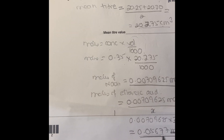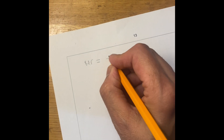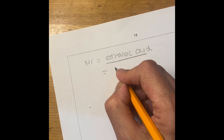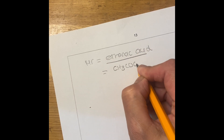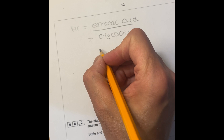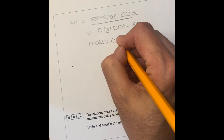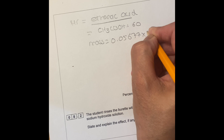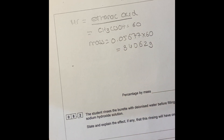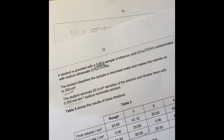Now work out the Mr of ethanoic acid — the molar mass. CH₃COOH equals 60 g/mol. Mass equals moles times Mr, so mass equals 0.05677 times 60, which gives 3.4062 grams of ethanoic acid.